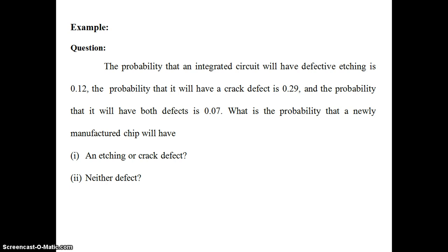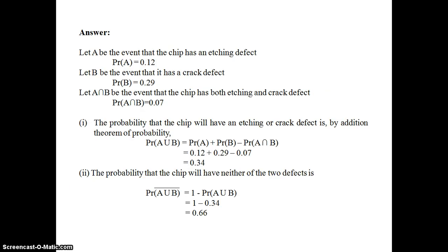The probability that an integrated circuit will have a defective etching is 0.12. The probability that it will have a crack defect is 0.29, and the probability that it will have both defects is 0.07. We need to find the probability that a newly manufactured chip will have an etching or crack defect, and with neither of the defects. Let us denote A as the event that the chip has an etching defect, so probability of A equals 0.12.